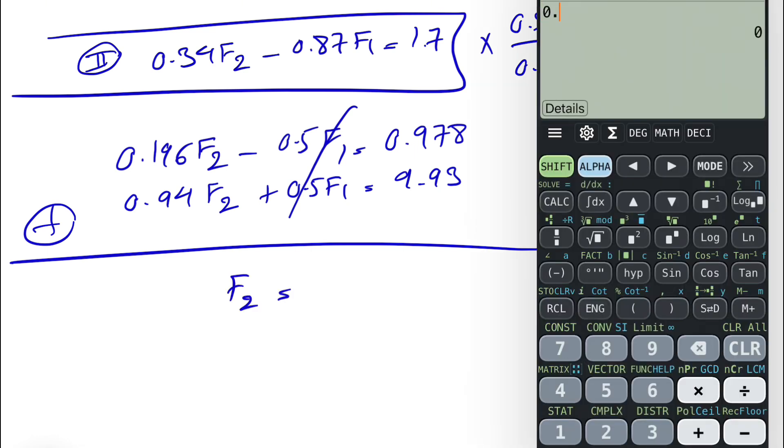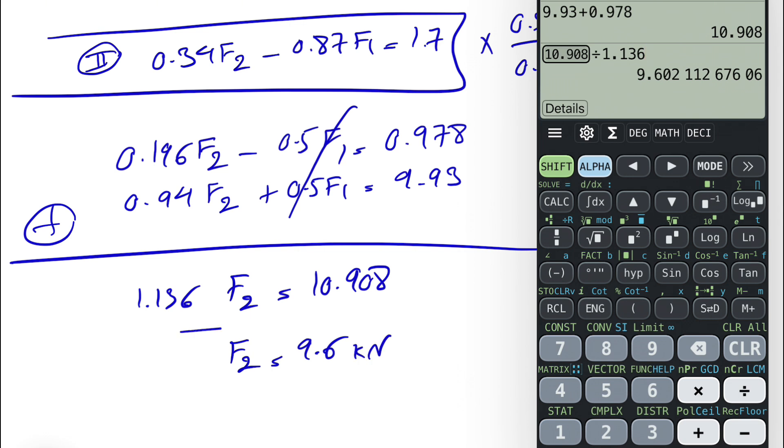And we have 0.196 plus 0.94, and on the right side you have 9.93 plus 0.978, 10.908, and we're going to divide that by 1.136. So we're going to get F2, 9.6 kilonewtons.